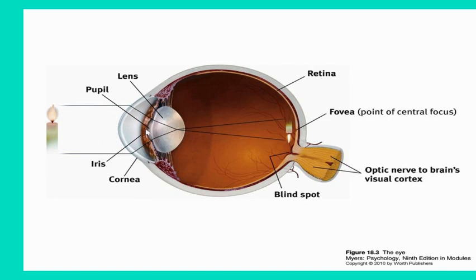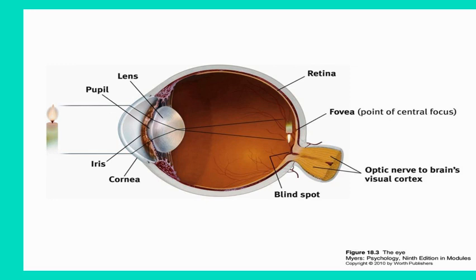Once that light energy goes through the pupil, it hits the lens. The lens is just like the lens of a camera where it bends and moves, changing shape and focusing that object onto the back of the eye — the retina. The object is cast on the back of the eye upside down, which is exactly what happens. It's not until it gets to the brain that we're able to flip that image and have clear vision. That process of the lens bending and changing shape to focus objects on the retina is called accommodation.